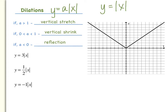A vertical stretch makes the graph narrower — almost like you were putting a string on either end and lifting each end, making it narrower. Now, if a is greater than zero but less than one, that's when we have a vertical shrink. What this does is make the graph wider — it's almost like you're putting a lid on top of the v and smashing it flat. We call that a vertical shrink.